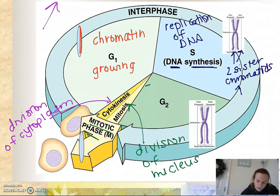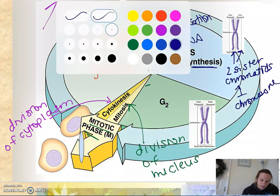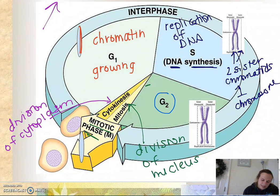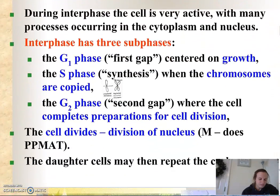During the gap two or the G2 phase, our cell is doing the final growth and final preparations in order to start mitosis, part of the M phase. In this G2 or gap two phase, our DNA is still packaged as a chromosome or two sister chromatids.